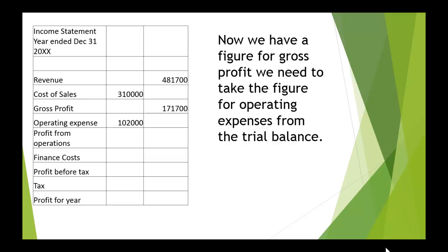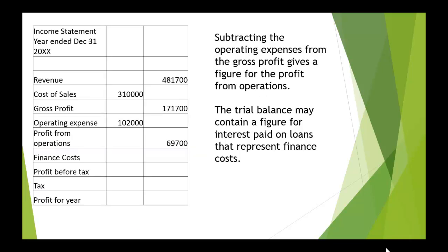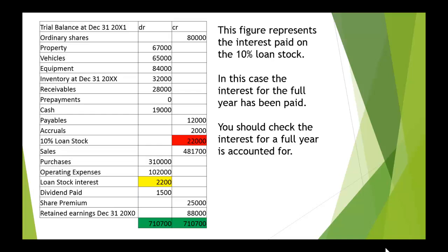Now we need to take the figure for the operating expenses, which we also got from the trial balance: 102,000. That included all the expense accounts — rent, rates, fuel, telephones, wages, salaries, and so on. Subtract that figure from the gross profit, and we're left with the figure for the profit of the company from operations: 69,700.